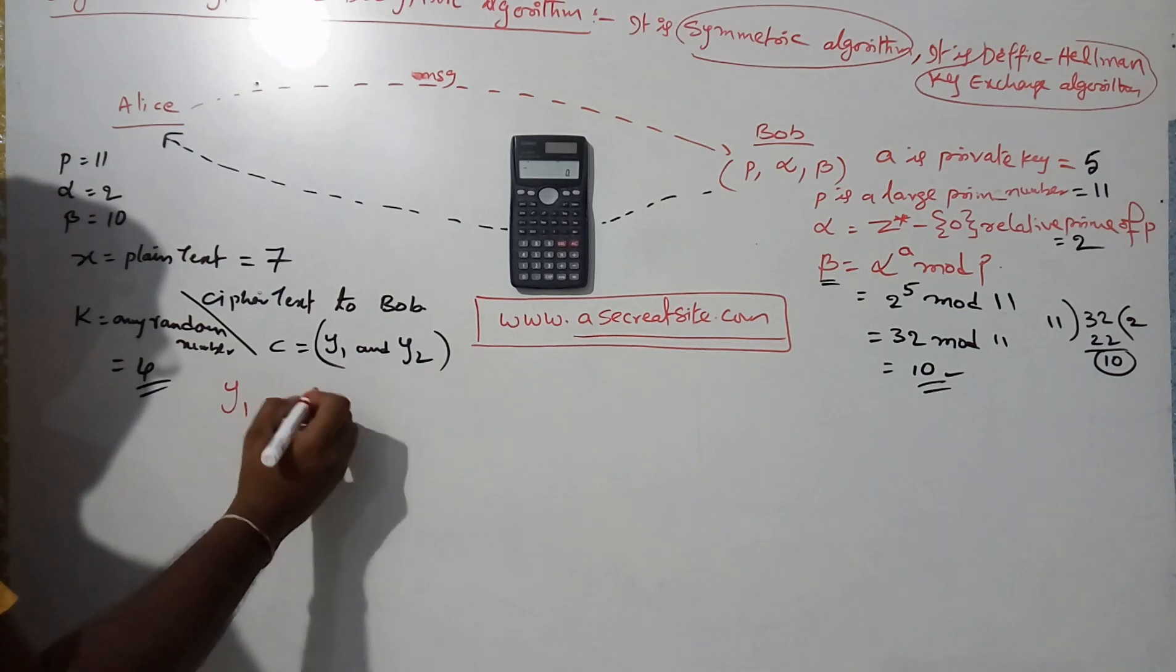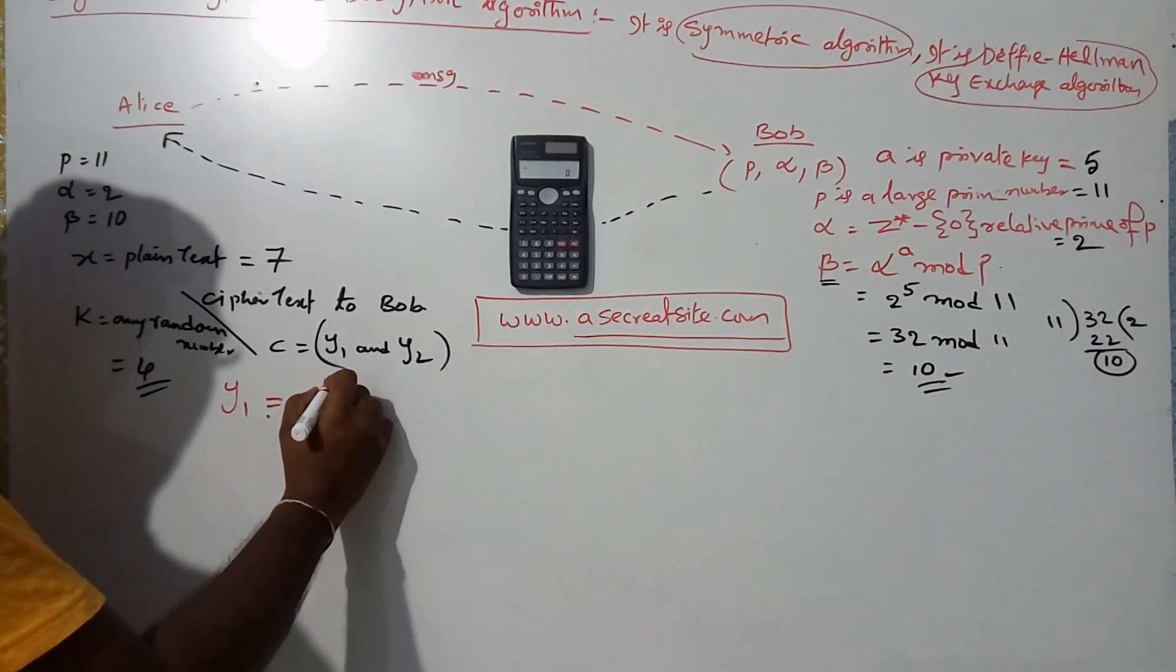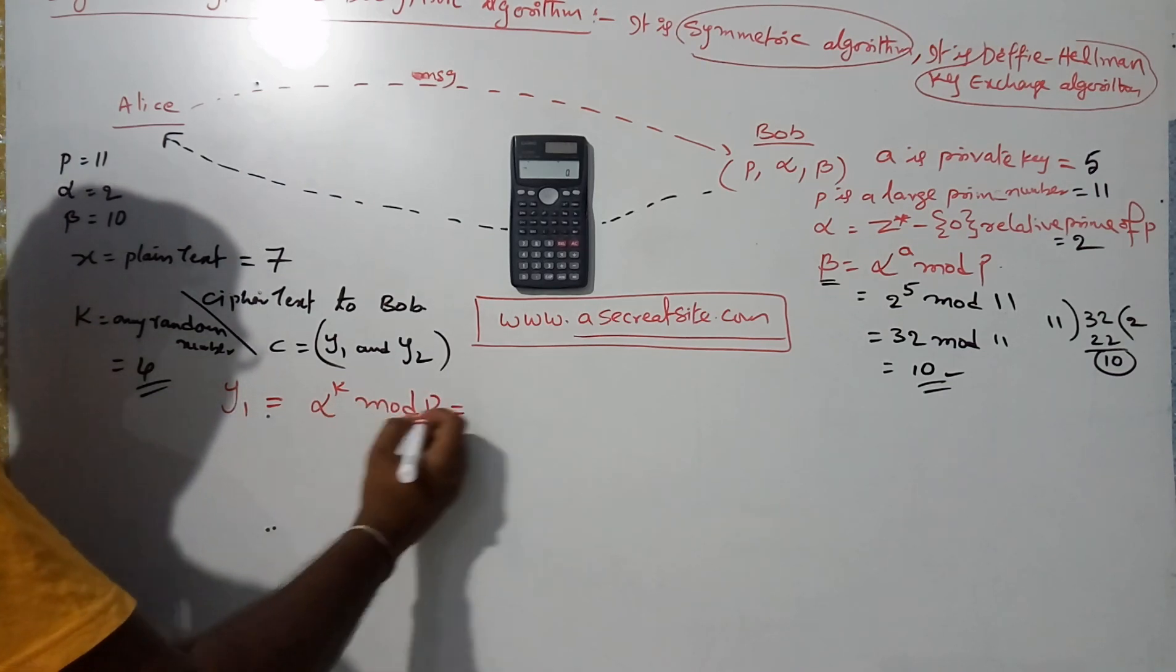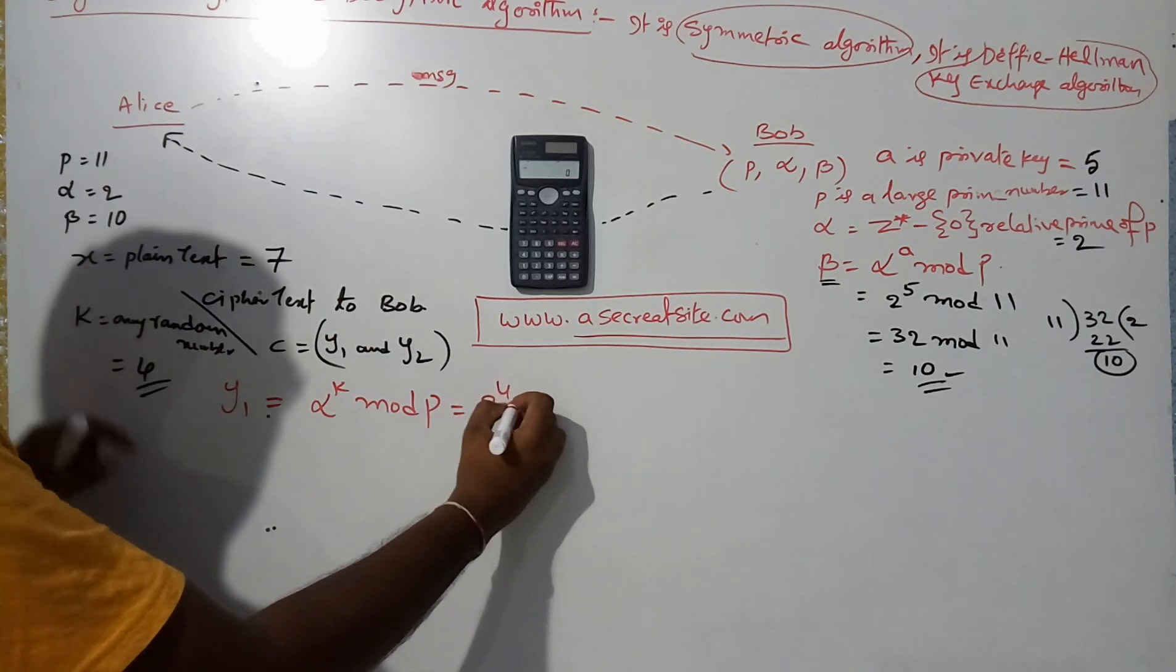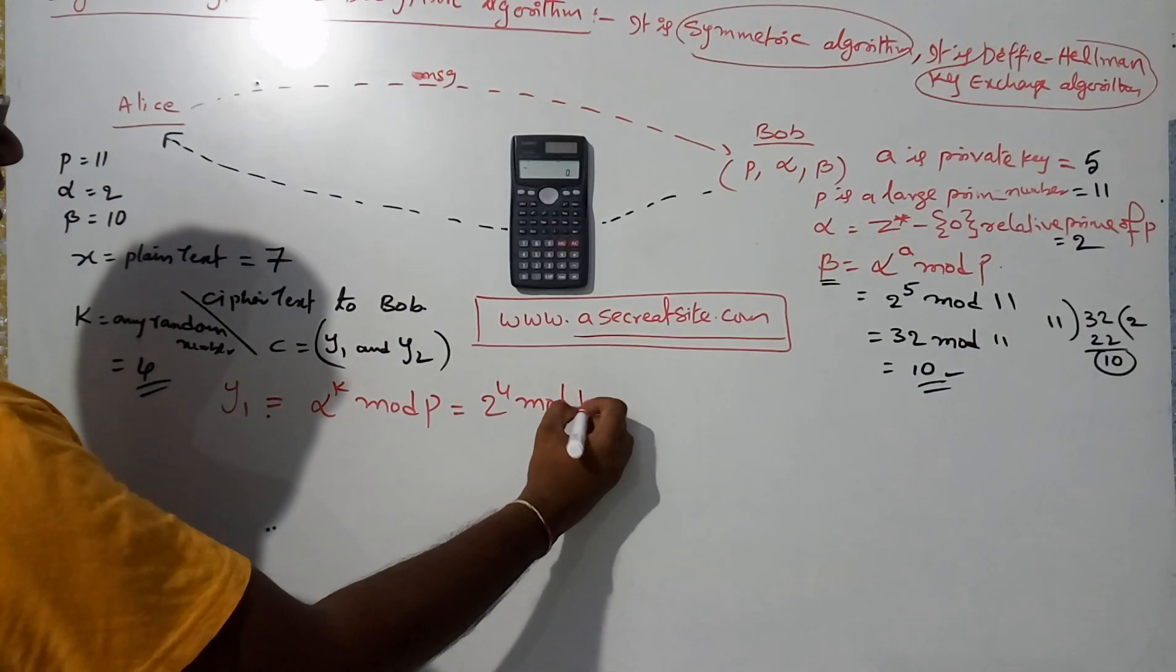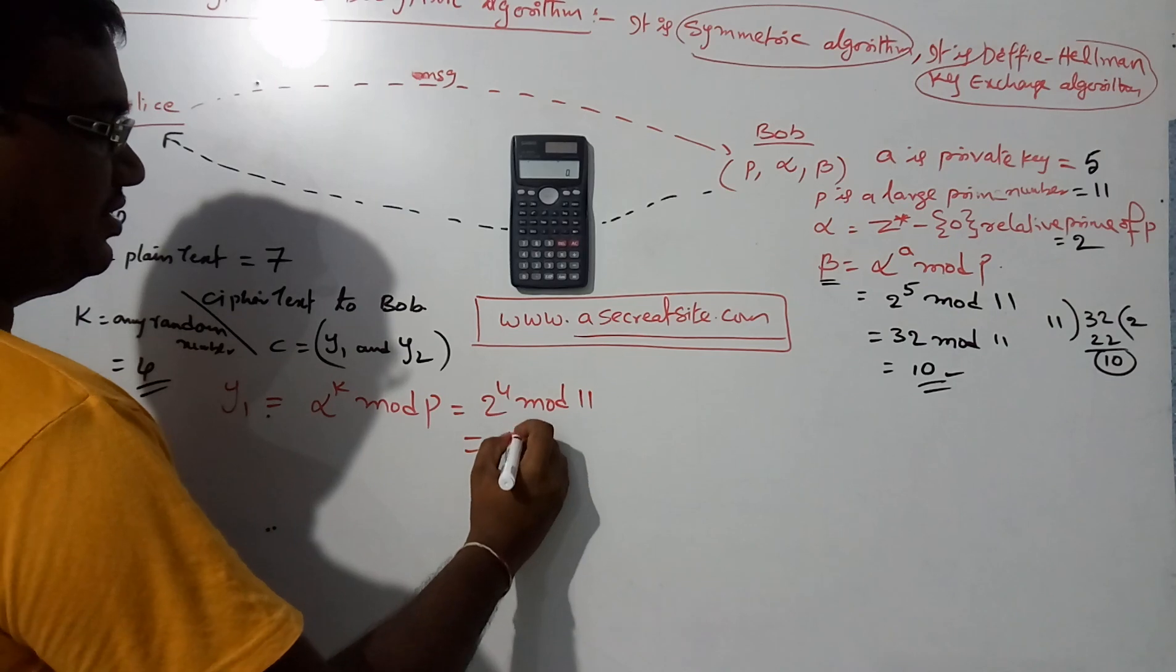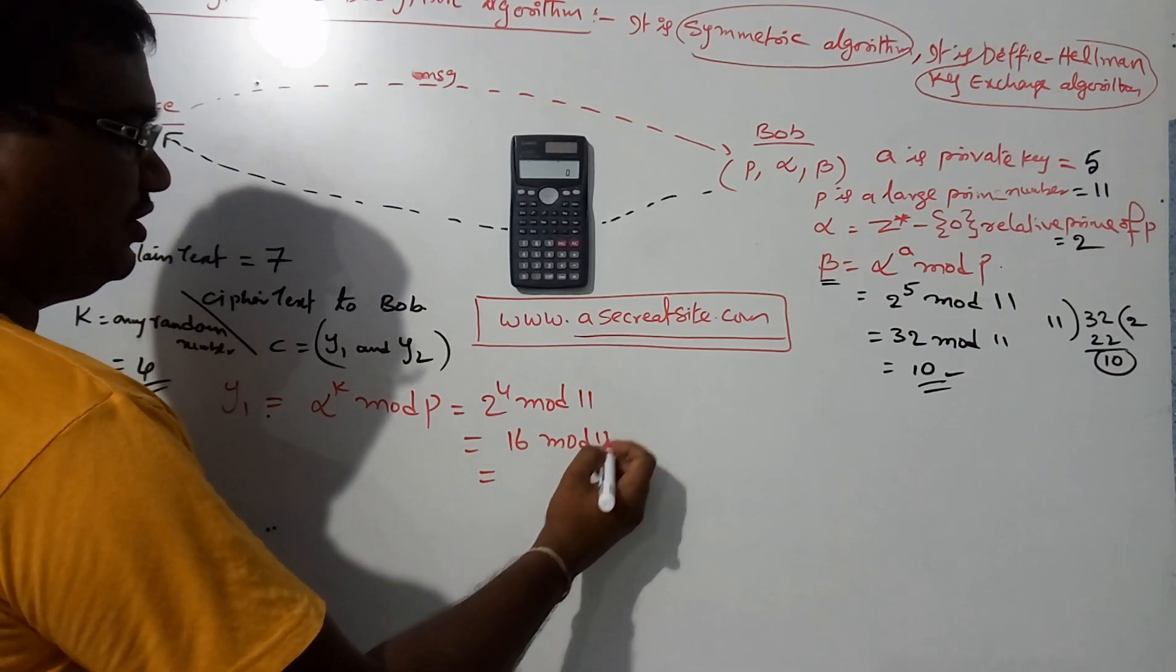Next, I am calculating y1. y1 is equal to alpha to the power k mod p. That is equal to alpha means 2 power k which is 4, mod p which is 11. 2 power 4 equals 16 mod 11.